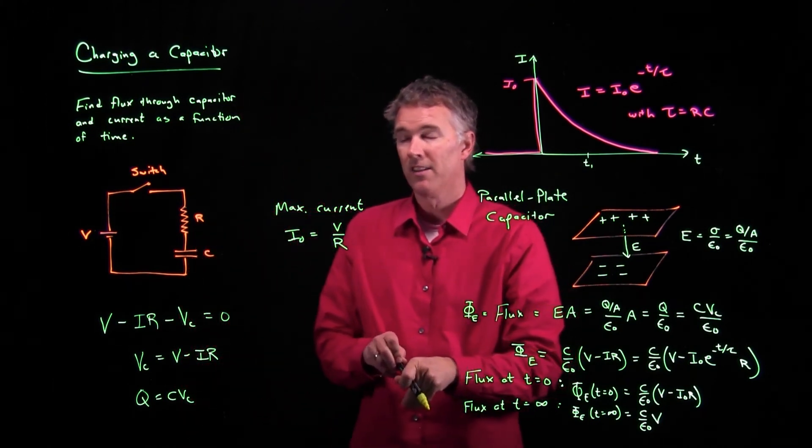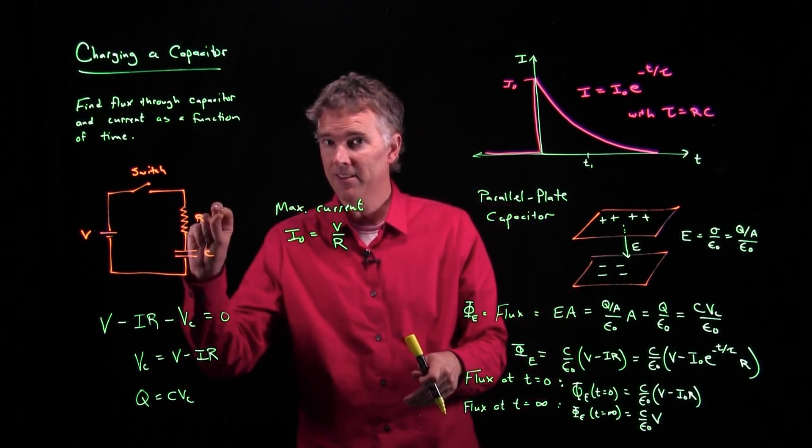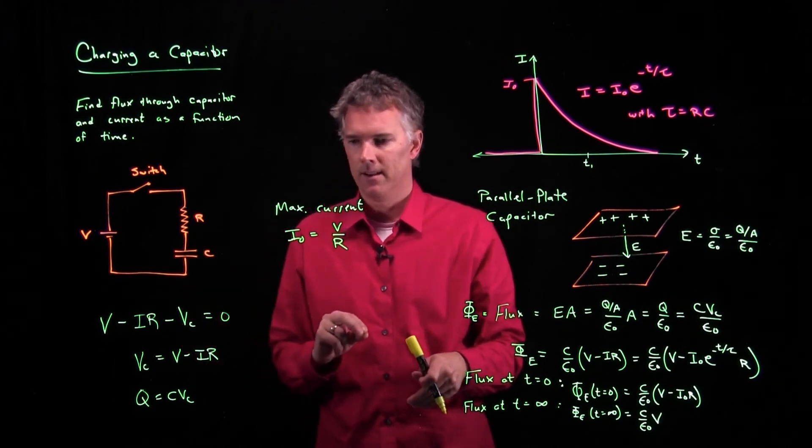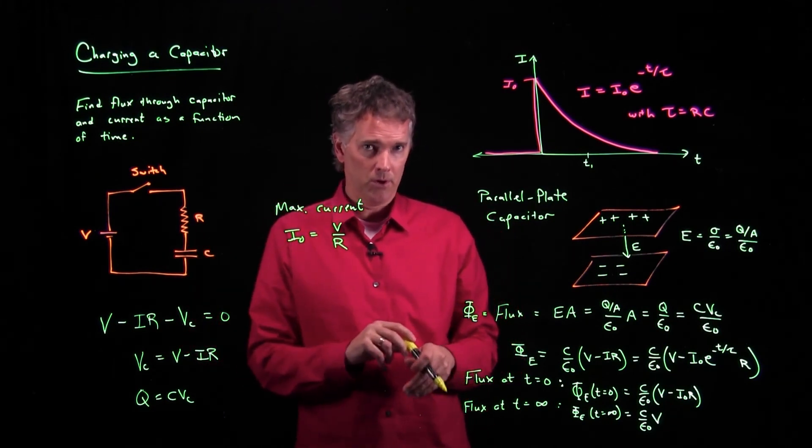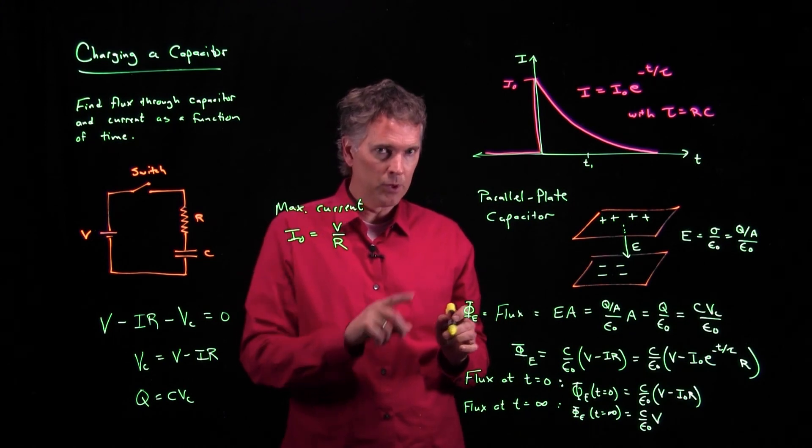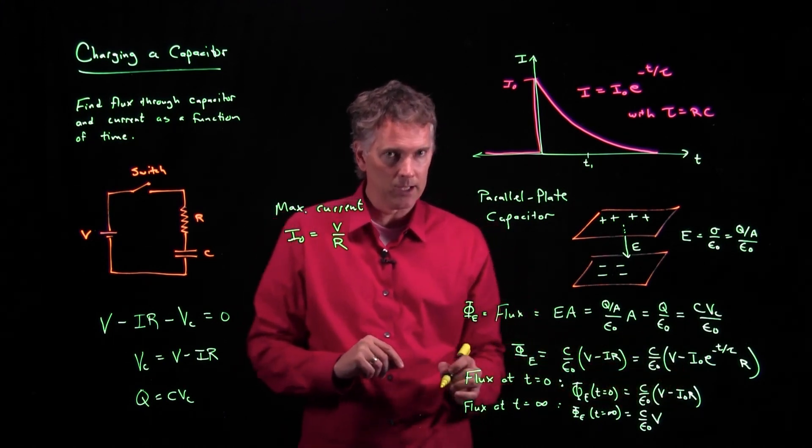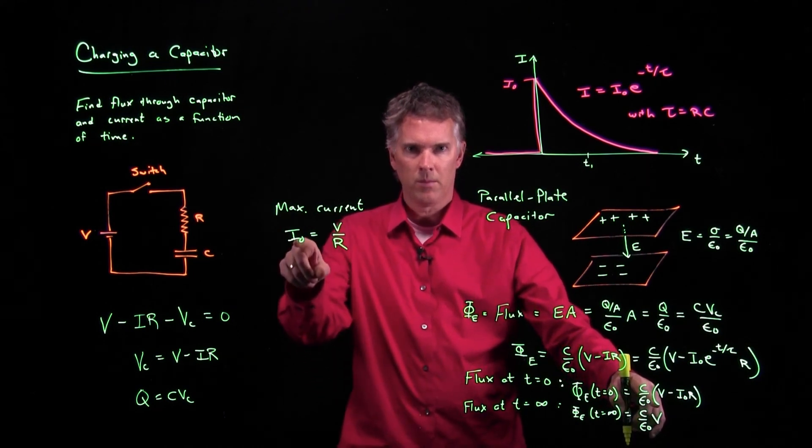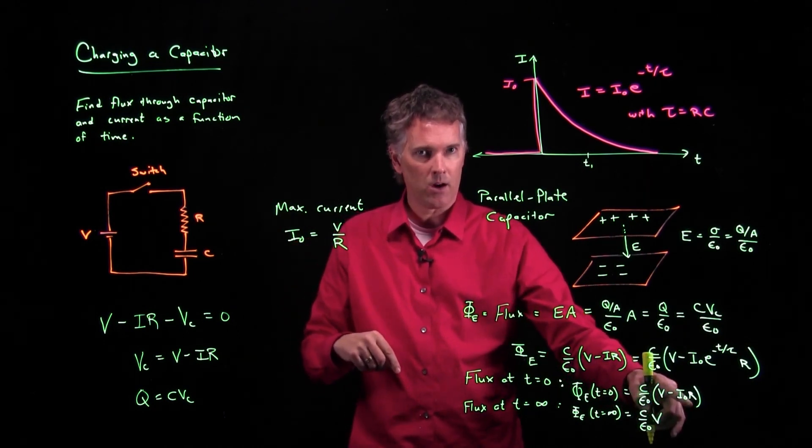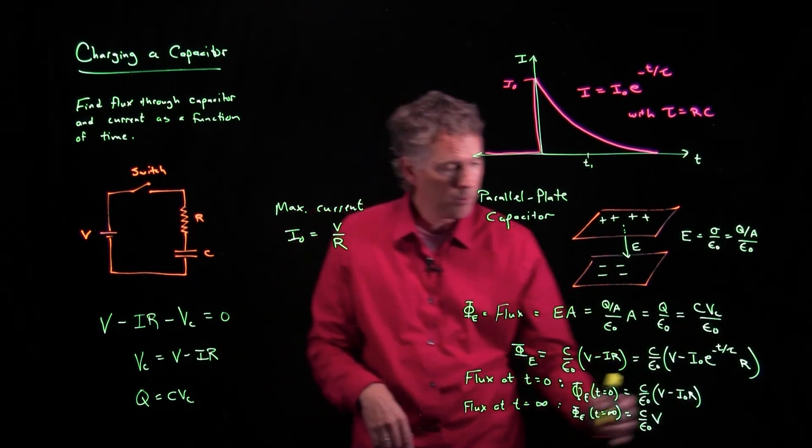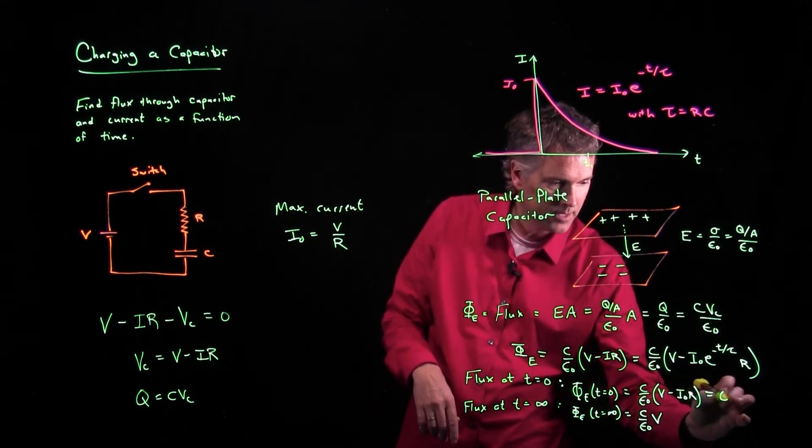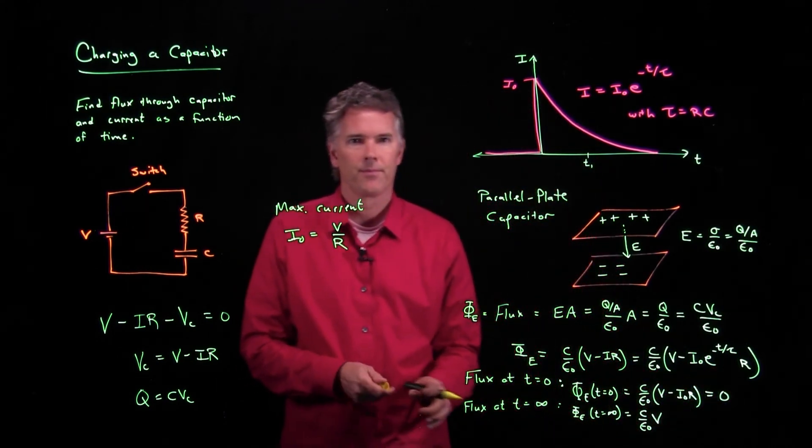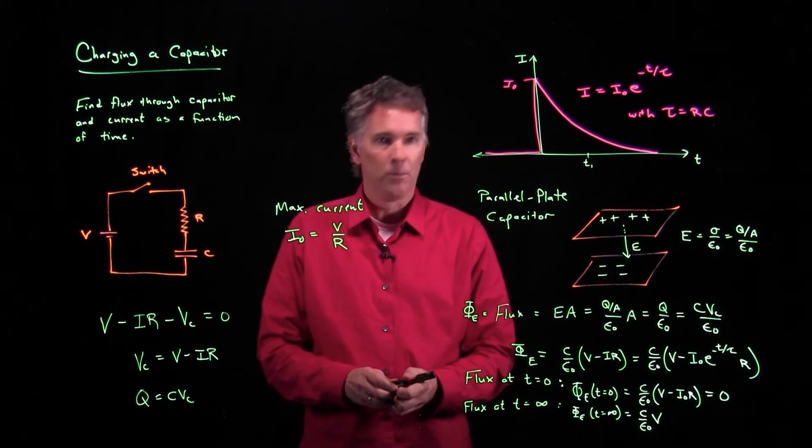is in fact just V over R. Just Ohm's law. Like the capacitor isn't even there yet. This is the maximum current, I naught. And now if we go back to our flux calculation and you look at this result right here, wait a minute, V is equal to I naught R. So what's the flux through the capacitor at T equals zero? It's zero. Hopefully that's clear.